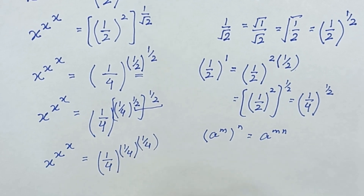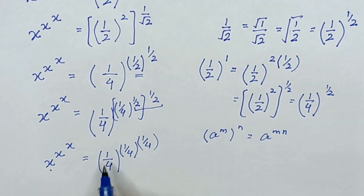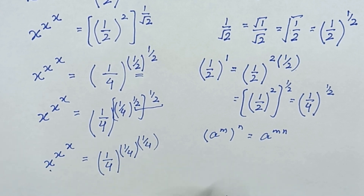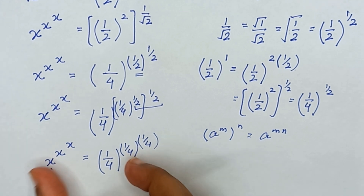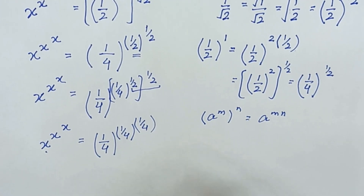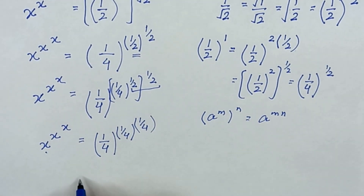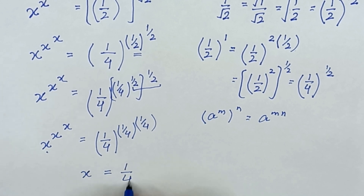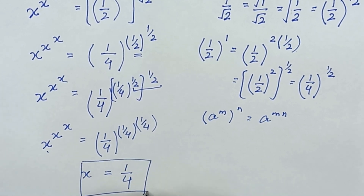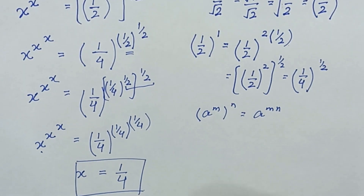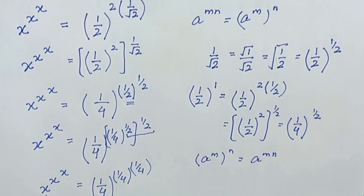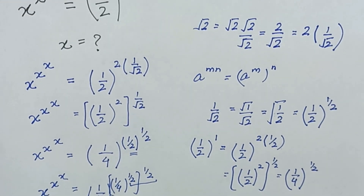Now you can see that this x is equal to 1 divided by 4, this x is equal to 1 divided by 4, and this x is equal to 1 divided by 4. When we equate both sides, the value of x is 1 divided by 4. So that is our required answer. I hope you liked this video — if you did, don't forget to subscribe to my channel.